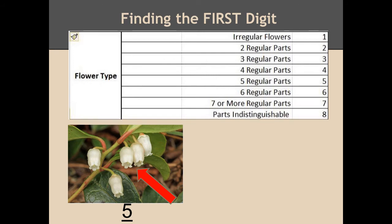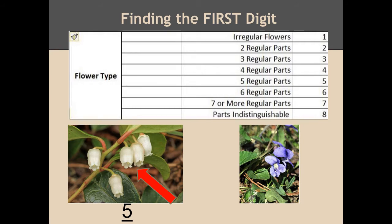How about this flower — is it regular or irregular? If you decided irregular, you are correct. The number that corresponds with irregular flowers is one. This is your first digit.